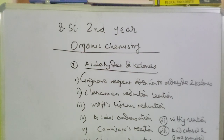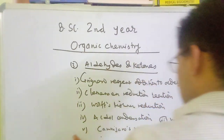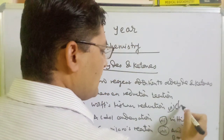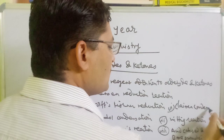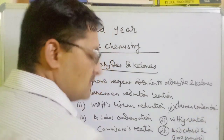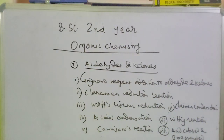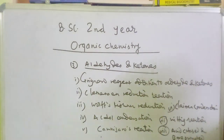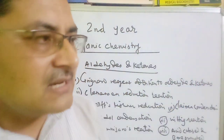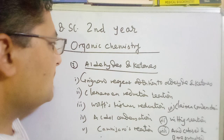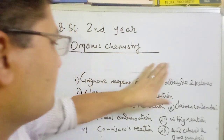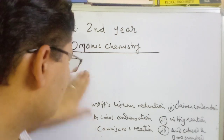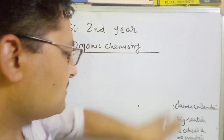Number 6 is acid-catalyzed and base-promoted halogenation of ketones. In this chapter we will cover all the aldehydes and ketones chapter reactions in detail. We will get the best questions for this in the BSC segment. All important chapters with positive value are important for the exam.